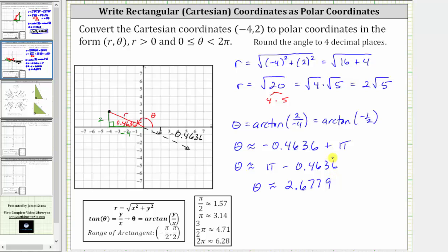Which means the polar coordinates satisfying the given conditions for the Cartesian coordinates negative 4 comma 2 are 2 square root 5 comma 2.6779 radians.